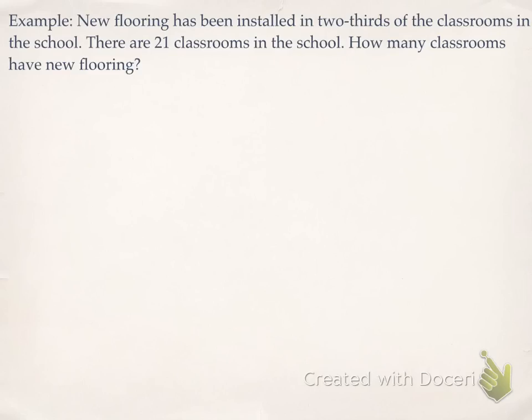The next example says that new flooring has been installed in 2 thirds of the classrooms in the school. There are 21 classrooms in the school. So how many classrooms have new flooring? So for this example, we're going to use the counter method. So this question is asking us, what is 21 times 2 thirds? Well, the 21 means that I have 21 counters to work with. The denominator is a 3. So this tells me how many groups I have to make.